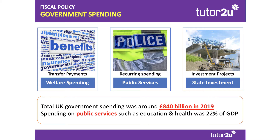In 2019, total UK government spending was over £800 billion. Of course, that's likely to be much higher in the next year or two as the economic impact of the coronavirus crisis starts to become apparent.